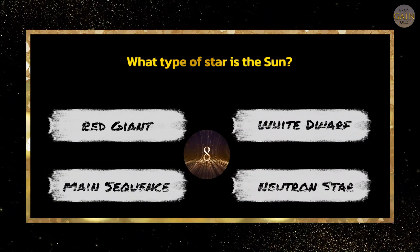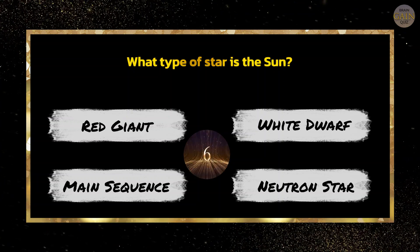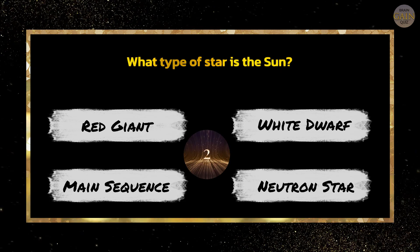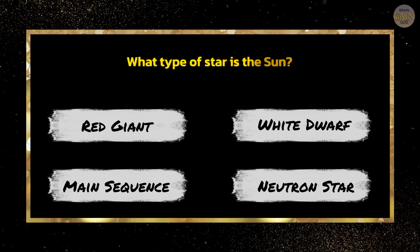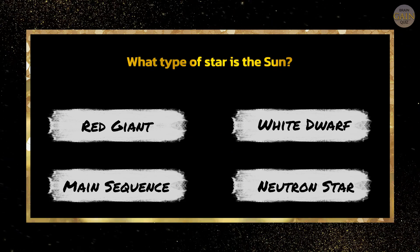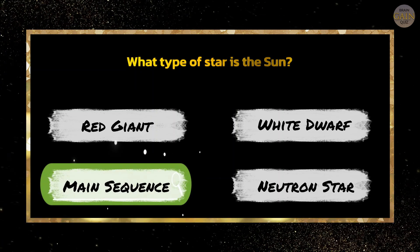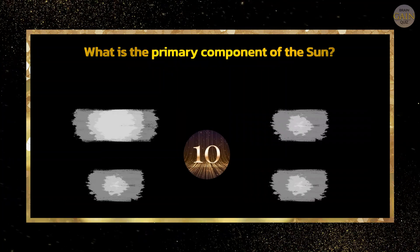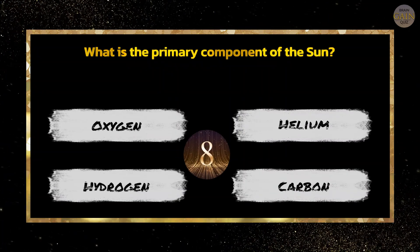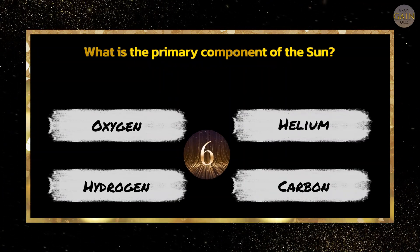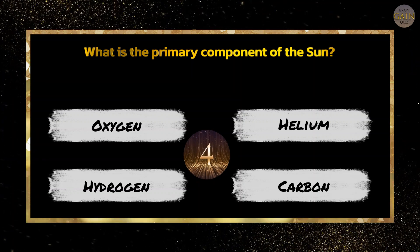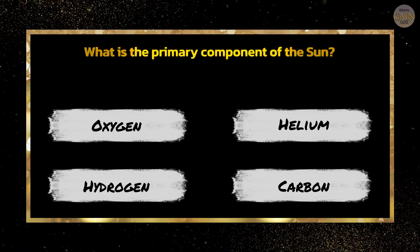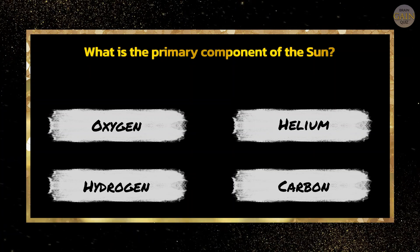What type of star is the Sun? What is the primary component of the Sun? Hydrogen.